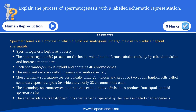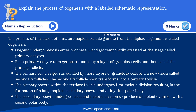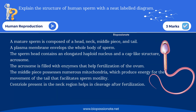The second question: explain the process of spermatogenesis with a neat labelled schematic representation. Two important diagrams they will ask for five marks are spermatogenesis and oogenesis. Remember all the phases from the beginning of the multiplication phase till the end of the maturation or differentiation phase. These two are very important for five marks.